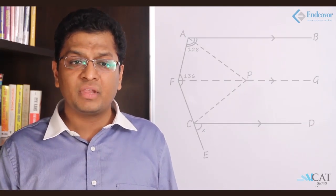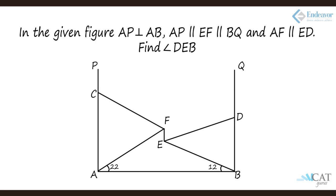Another question: AP is perpendicular to AB, AP is parallel to EF and BQ, and AF is parallel to ED. Find angle DEB. We extend FE to point T, perpendicular to AB. In the right-angle triangle, angle AFG adds up to 90 degrees with the other angle of 22 degrees, so angle AFG = 68 degrees. Hence angle EDB = 68 degrees. The internal angle DBE adds 12 degrees to make 90 degrees, giving 78 degrees. So the third angle of the triangle DB = 180 − 68 − 78 = 34 degrees.